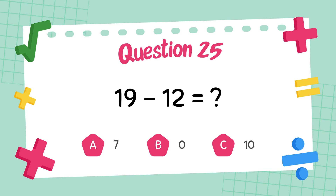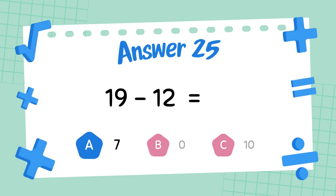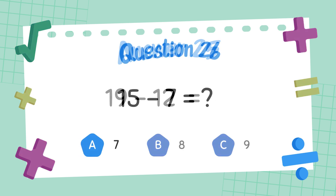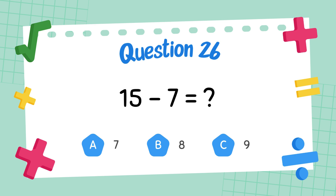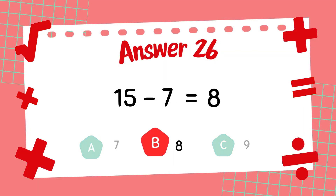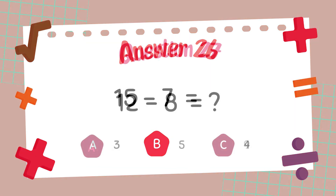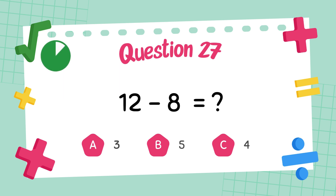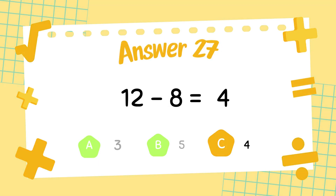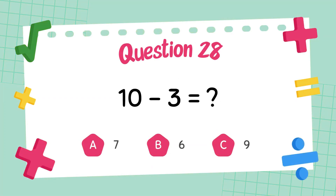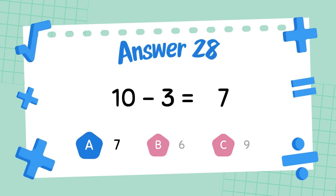What is 19 minus 12? The answer is 7. What is 10 minus 3? What is 15 minus 7? The answer is 8. What is 10 minus 3? The answer is 7.